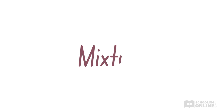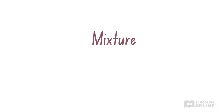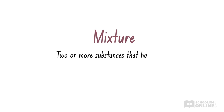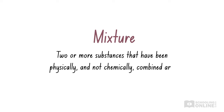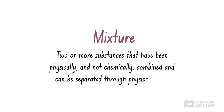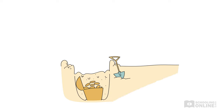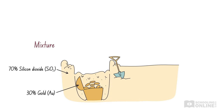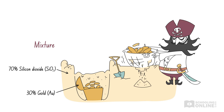In the previous lesson, we introduced mixtures as two or more substances that have been physically and not chemically combined and can be separated through physical means. For example, a mixture of gold and sand formed when Blackbeard buried his treasure. He could physically separate this mixture using a sieve, removing the smaller sand particles and collecting the precious gold coins.